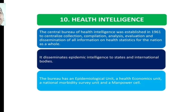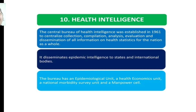The next function is health intelligence. The Central Bureau of Health Intelligence was established in 1961 to centralize the collection, compilation, analysis, evaluation, and dissemination of all information on health statistics for the nation as a whole. It disseminates epidemic intelligence to state and international bodies. The bureau has an epidemiological unit, a health economics unit, a national morbidity survey unit, and a manpower cell.